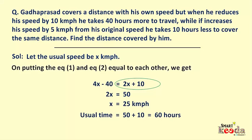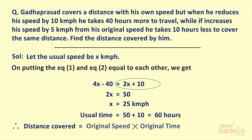So friends, we have got the usual speed and the usual time as well. Therefore the distance covered is equal to original speed multiplied by original time. On putting the values, we get 25 × 60 = 1500 km. And that's the answer.